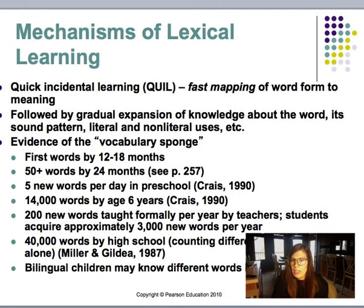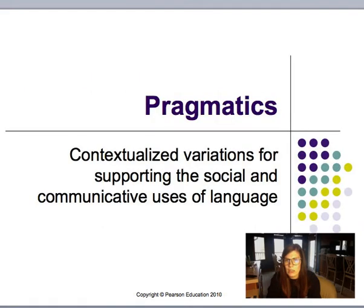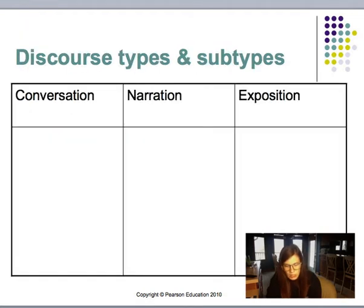We have mechanisms of lexical learning, including quick incidental learning, which is fast mapping of word form to meaning. When we look at meaningful differences, there is a difference in numbers of words heard by children wearing microphones, and significant differences associated with SES. Children from low-SES homes are hearing fewer words — around 600 words per day for low-income families. For pragmatics, we have contextualized variations for supporting the social and communicative uses of language, relating to language use and contextual variation.